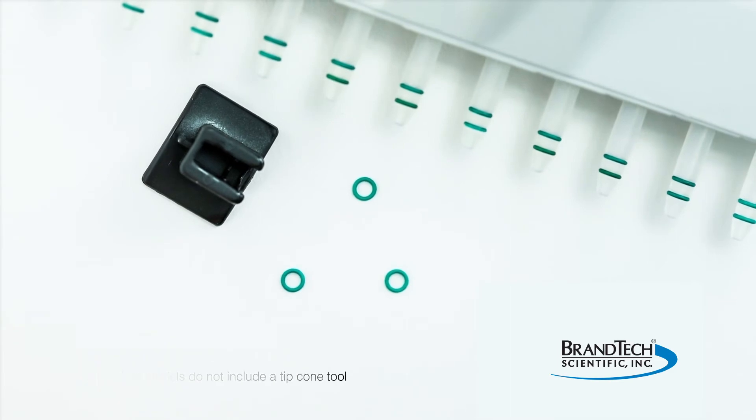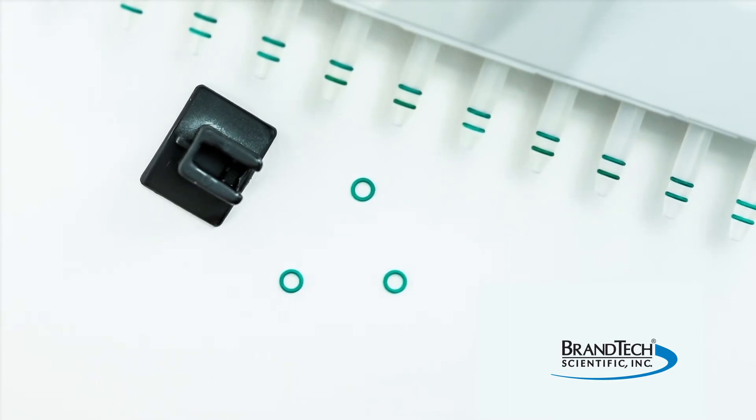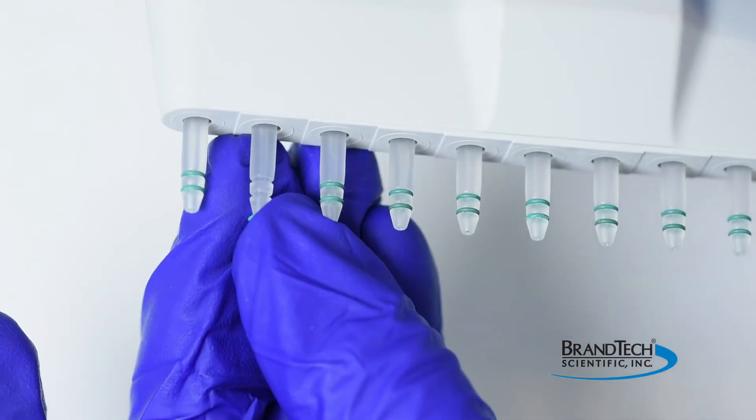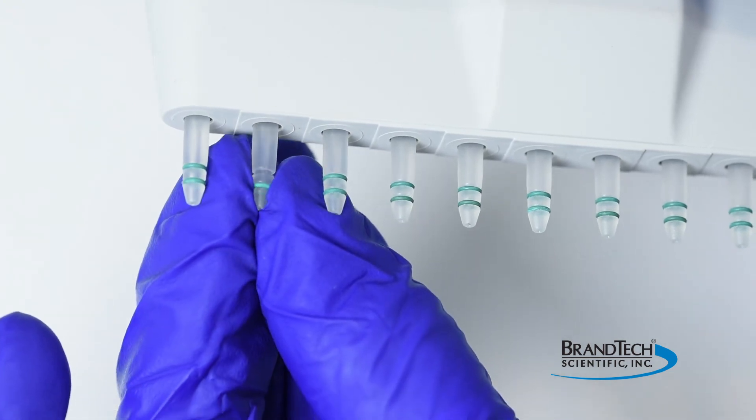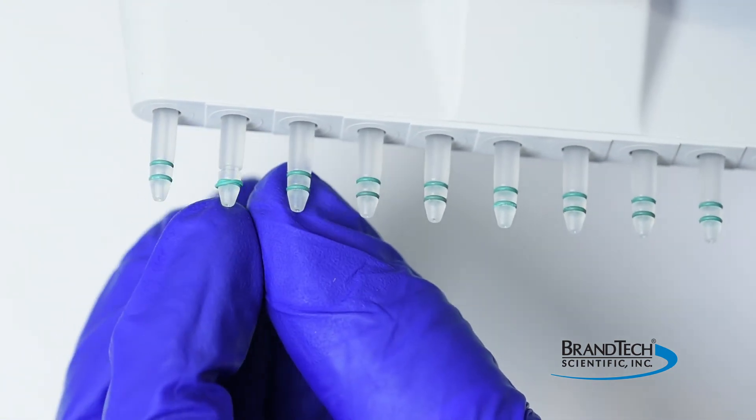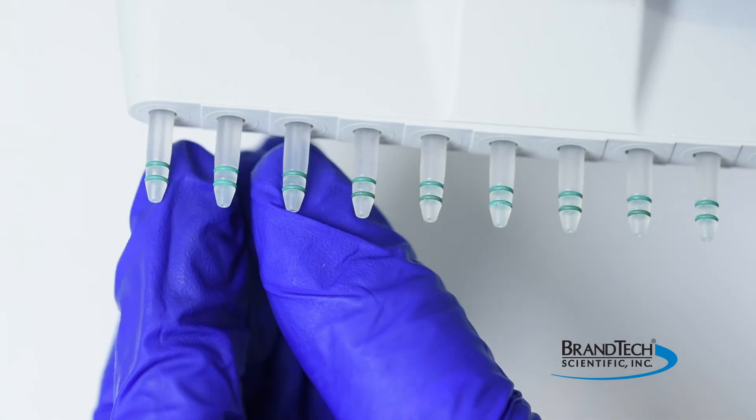To attach O-rings, simply roll the new ring onto the tip cone. With dual ring design, the first ridge will be populated, then the second one will be moved over the first to populate the second ring space.